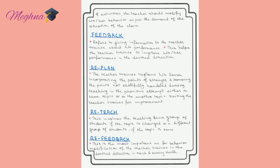The fourth step is re-planning, where the teacher trainee re-plans her lesson with required modifications based on feedback. The fifth step is re-teaching, where the trainee re-teaches the modified lesson to another group of students. The sixth step is re-feedback, where the teacher trainee again receives feedback from students on her performance. And thus the cycle continues.